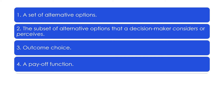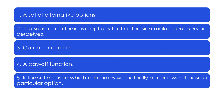Fourth, a payoff function. It means we, as decision-makers, place a value or utility upon each of the possible outcomes of choice. We can assign points to each of the possible outcomes, such as 5 points for hiring candidate A and 7 points for hiring candidate B. It doesn't have to be numerical values — as long as we can order or rank the possible outcomes by our preferences, we should be able to reach a decision. Fifth, information as to which outcomes will actually occur if we choose a particular option. The information could be incomplete due to the constraints of our knowledge, skills, and time.